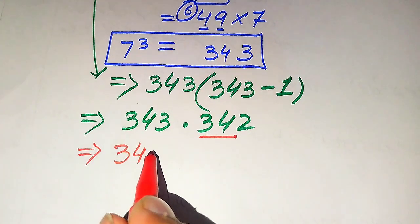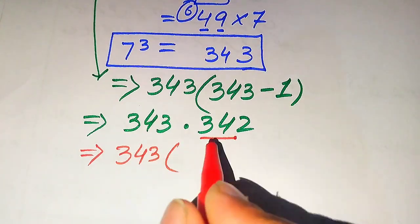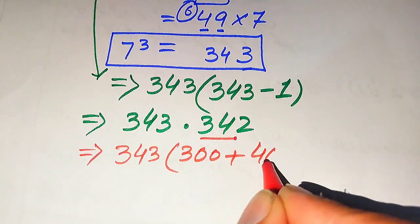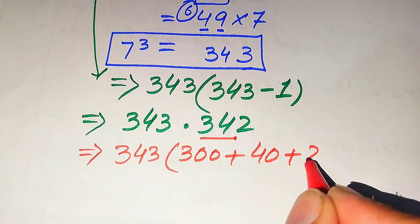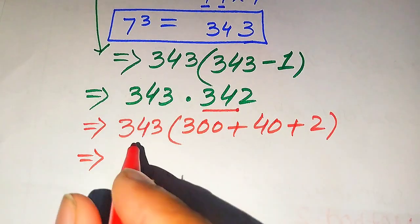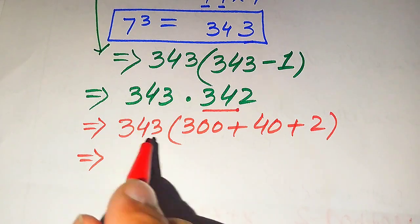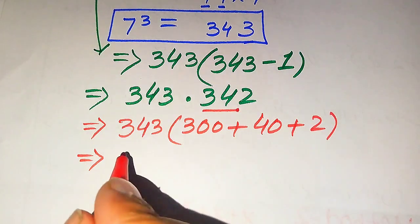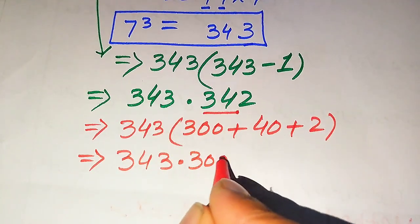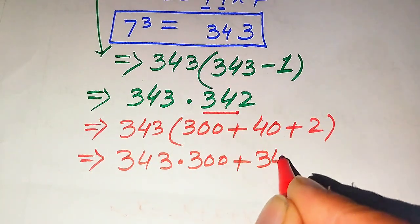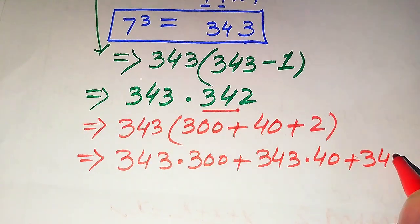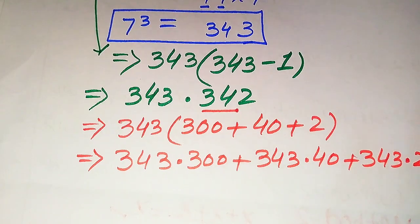First, we focus on the term 342 and break it into hundreds, tens, and ones. We write this value as 300 plus 40 plus 2. In the next step, we multiply 343 by each of these values: 343 multiplied by 300, plus 343 multiplied by 40, plus 343 multiplied by 2.